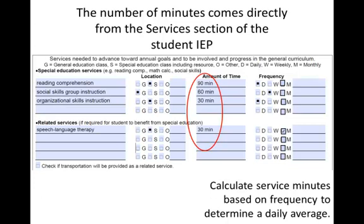After the team identifies present levels of academic and functional performance and writes goals to address each area of need, the team must consider the type and amount of services required for the student to make reasonable progress toward the goals. Special education services are areas of specialized instruction that will be provided so that the student will advance toward annual goals and be involved in and progress in the general curriculum for their age. Related services are provided so that the student can benefit from special education. For each service listed, the IEP team must identify the location, amount of time, and frequency of the service.